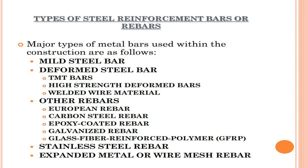The major types of steel reinforcement bars or rebars used within construction are as follows: mild steel bar, deformed steel bar, PMT bars, high strength deformed bars, welded wire material, European rebar, carbon steel rebar, epoxy coated rebar, galvanized rebar, glass fiber reinforced polymer, stainless steel rebar, and expanded metal or wire mesh rebar.